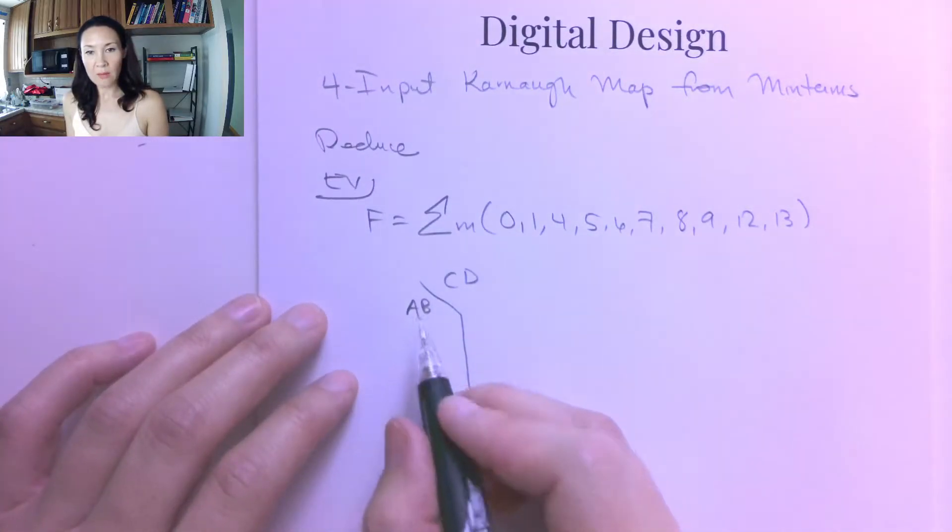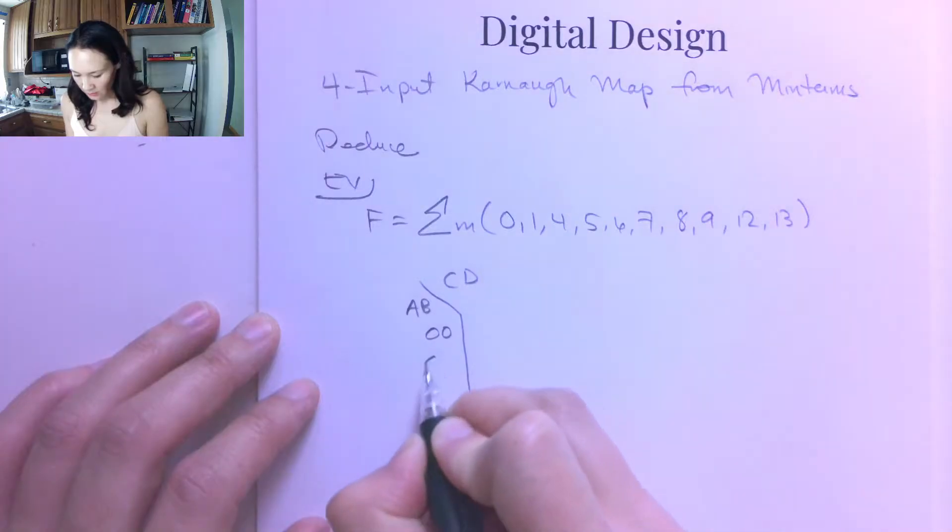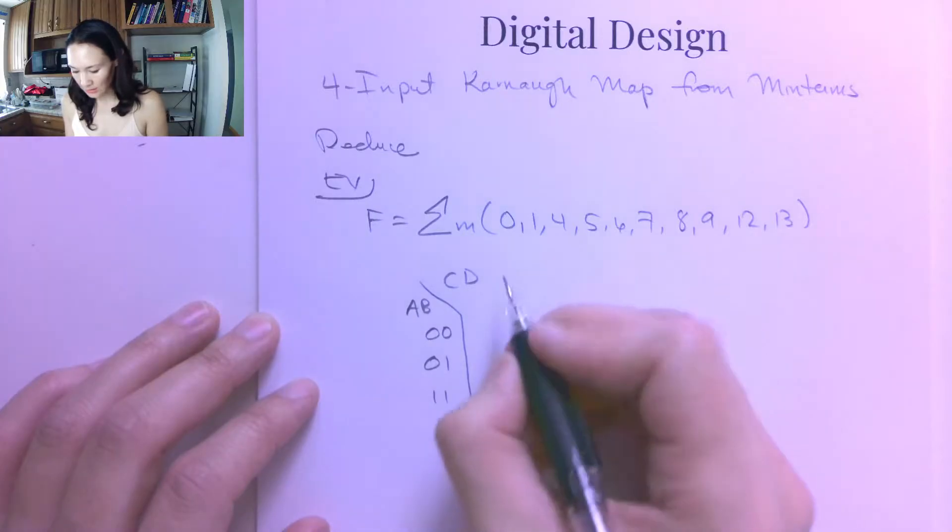And now all the input combinations for A and B are 0, 0, 0, 1, 1, 1, 1, 0. This is in gray code instead of regular BCD.